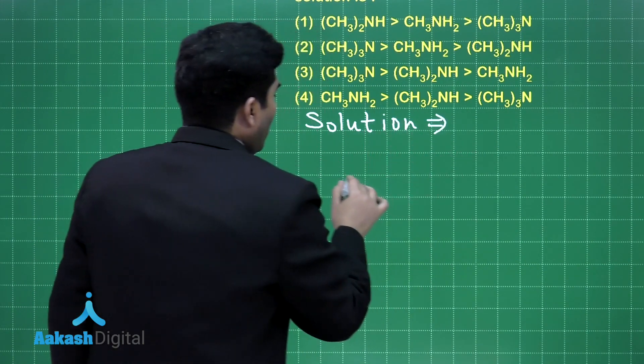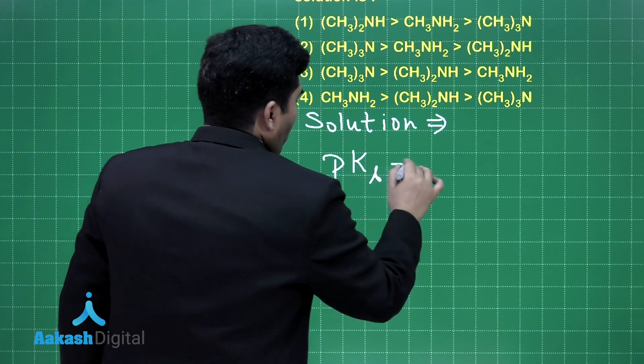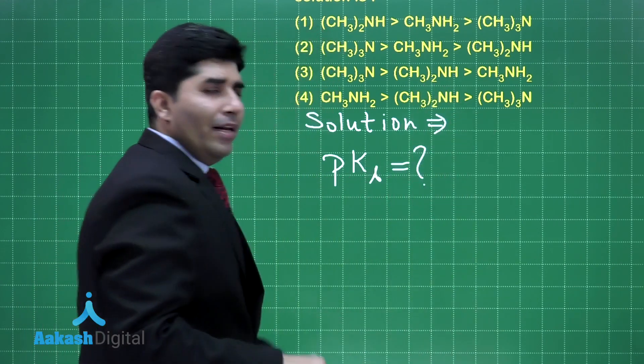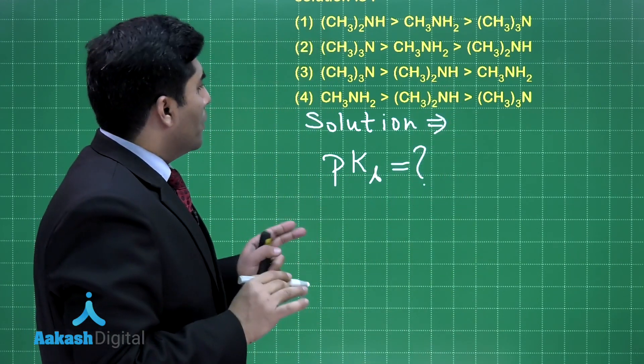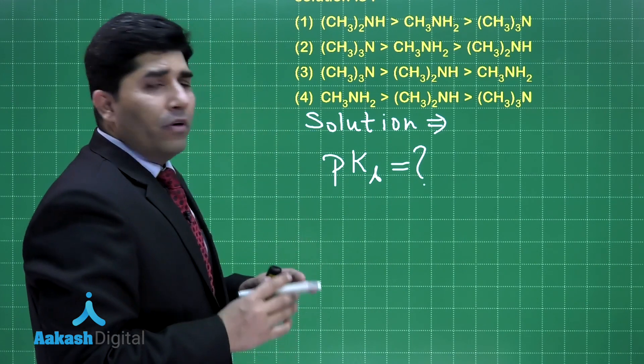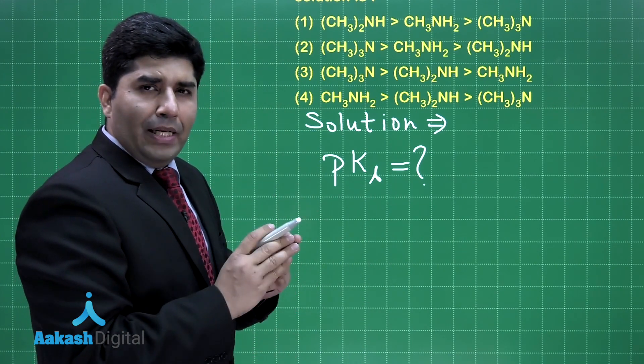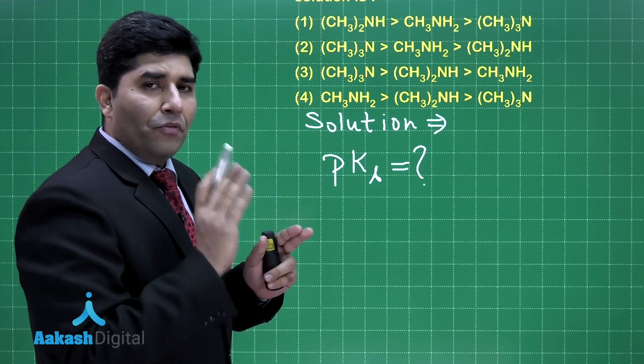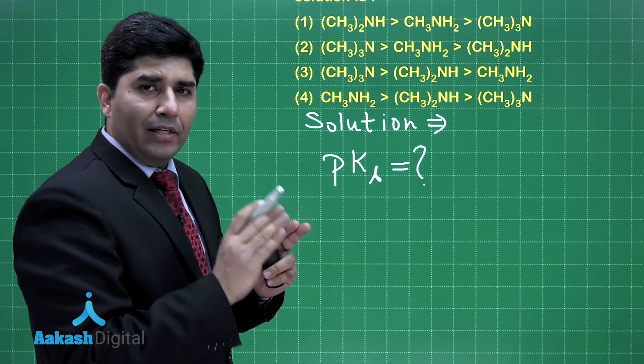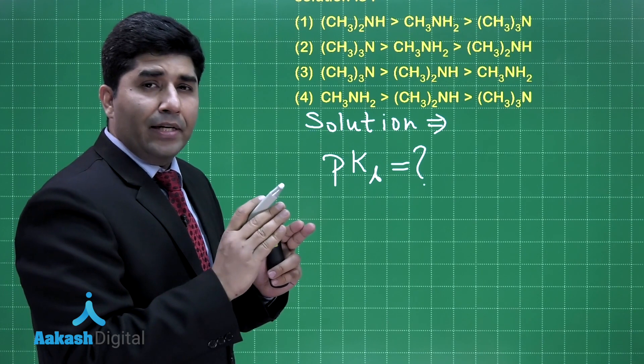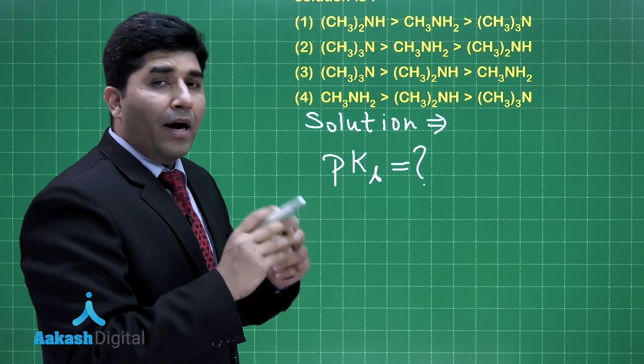Right? Now, if we know the value of PKB, then we can decide. In the case of basic character of amine, there are three factors involved. First is inductive effect. Second is steric hindrance. Third is hydration energy.